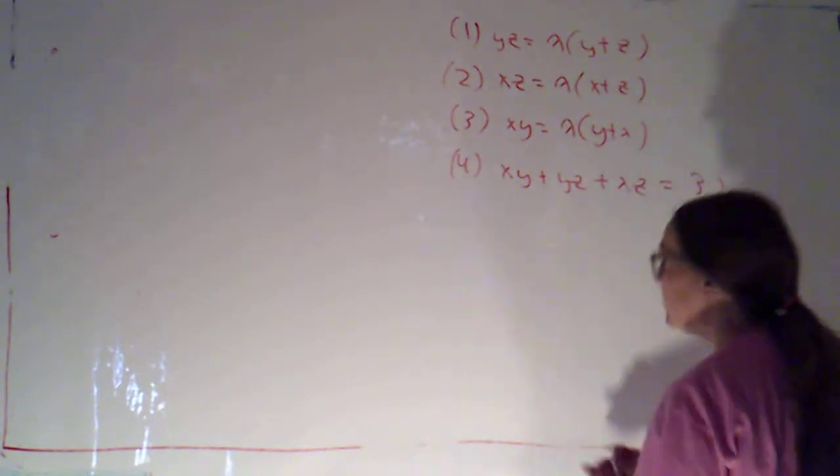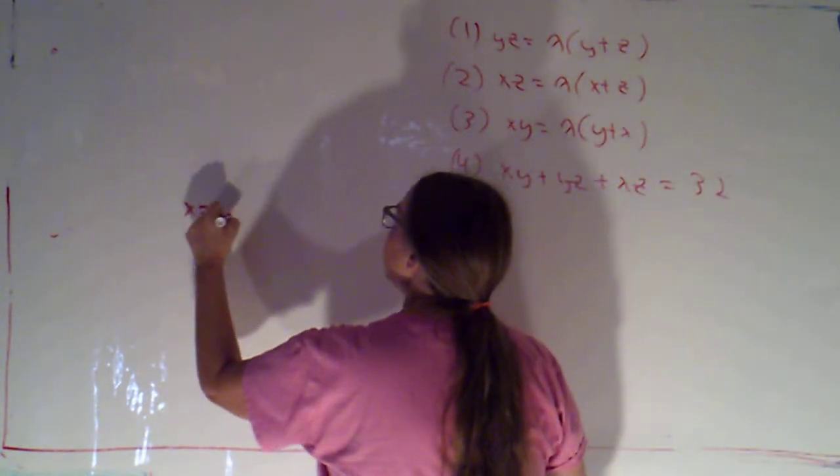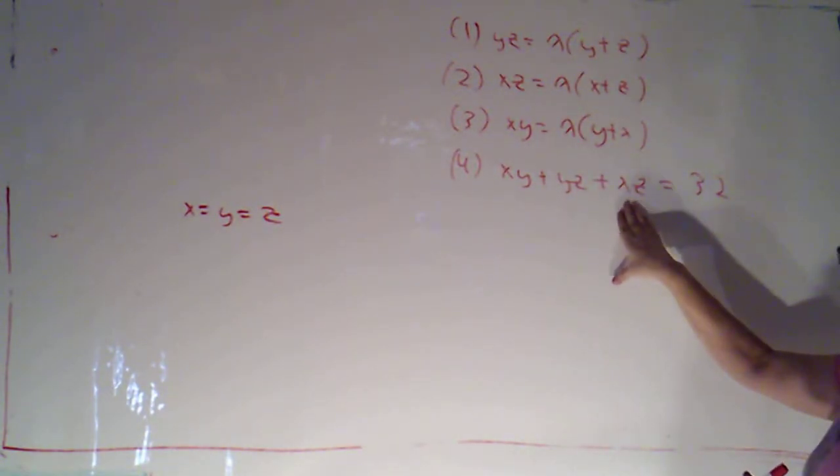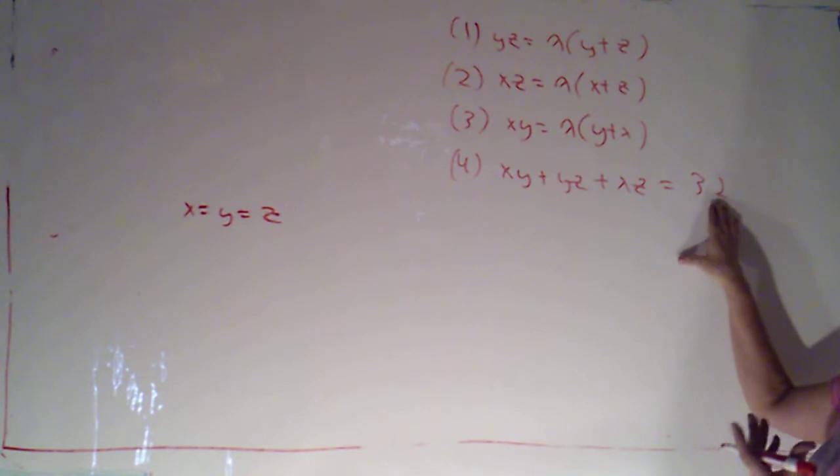So now I know from equations one, two, and three that x equals y equals z. Time to use equation four and plug into the constraint to figure out what they all are.